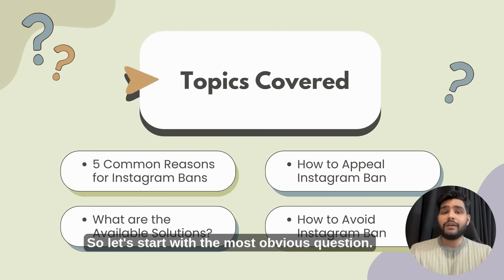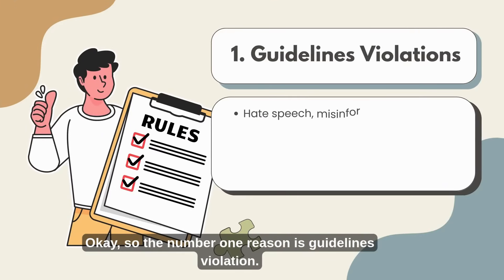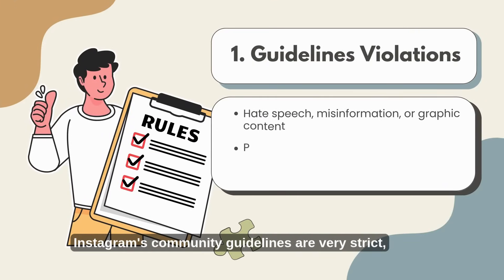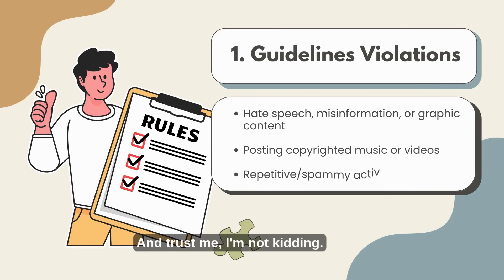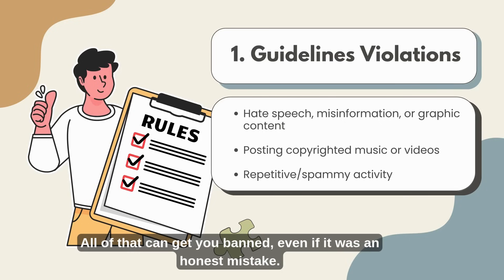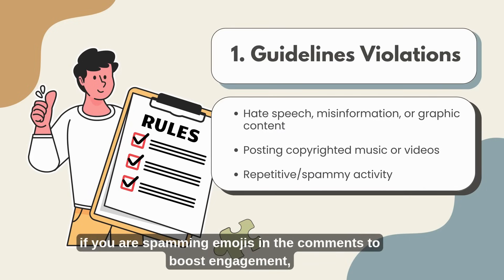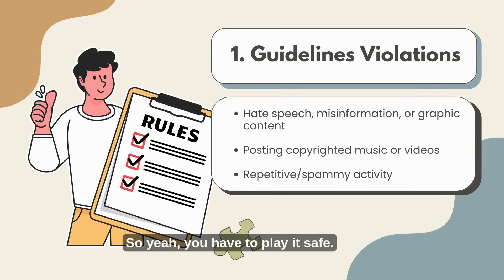So let's start with the most obvious question: why does Instagram ban your account in the first place? The number one reason is guidelines violation. Instagram's community guidelines are very strict, probably more than your primary school principal. Posts with hate speech, violence, misleading information, or even copyrighted music — all of that can get you banned, even if it was an honest mistake. And if you're spamming emojis in the comments to boost engagement, according to Instagram, that's suspicious behavior. So you have to play it safe, otherwise Instagram will ban your account.